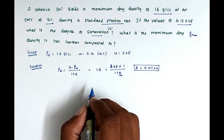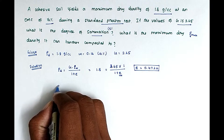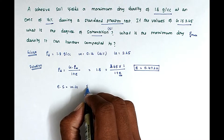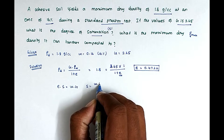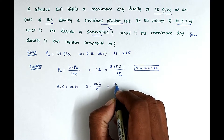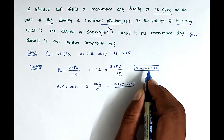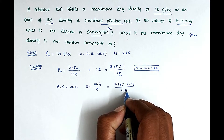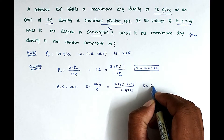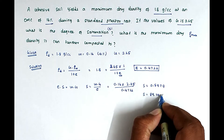We found the void ratio E = 0.4722. Now we can find the degree of saturation using the formula E·S = W·G, so S = W·G / E. Substituting: S = 0.16 × 2.65 / 0.4722. From that we get S = 0.8979, that is S = 89.79 percentage.